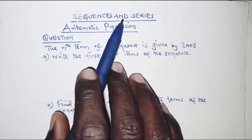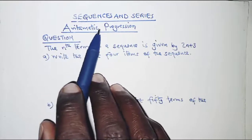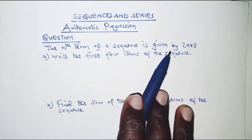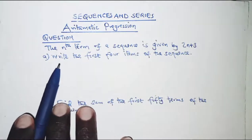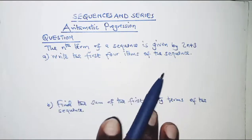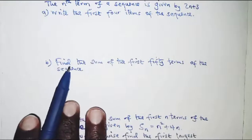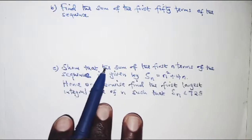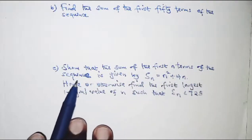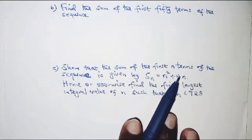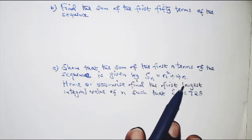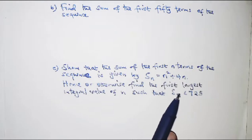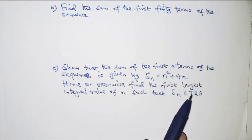The topic today is sequences and series, and the question is about arithmetic progression. The nth term of a sequence is given by 2n plus 3. Part a: write the first four terms of the sequence. Part b: find the sum of the first 50 terms. Part c: show that the sum of the first n terms is given by n squared plus 4n. Hence or otherwise find the largest integral value of n such that the sum of n terms is less than 725.